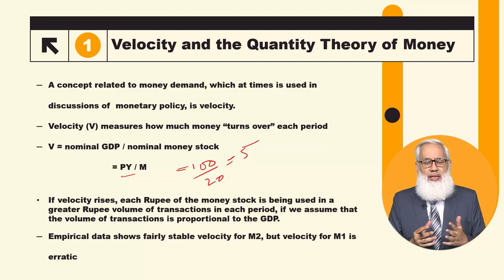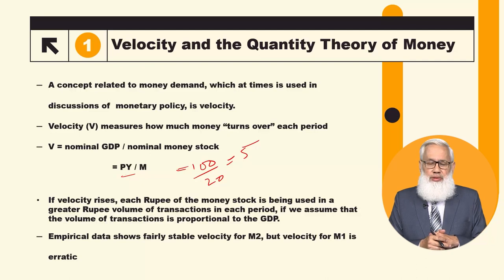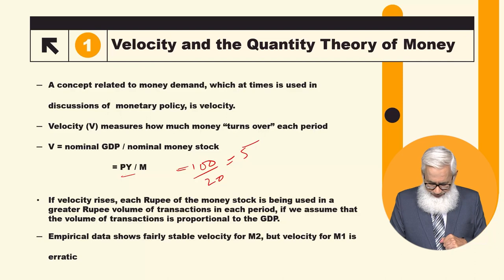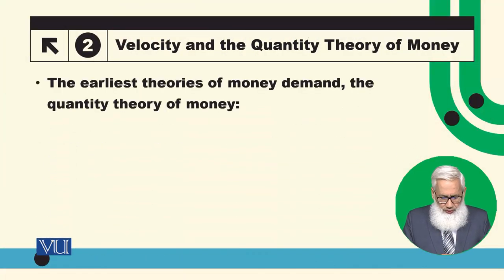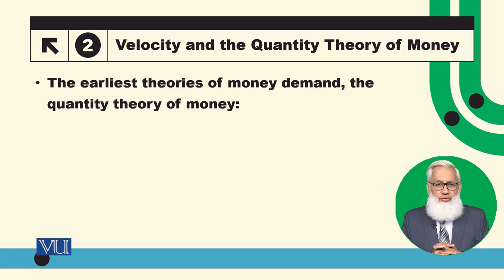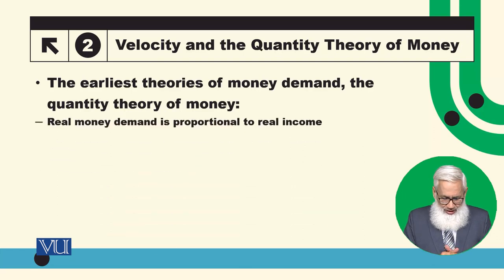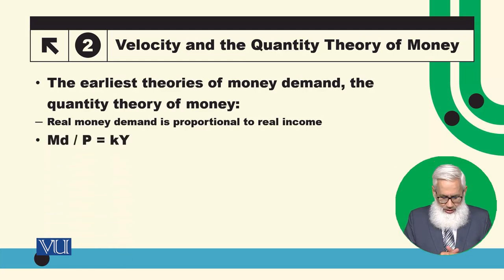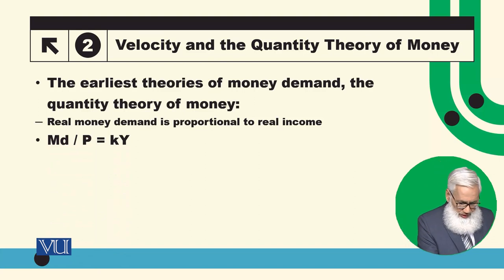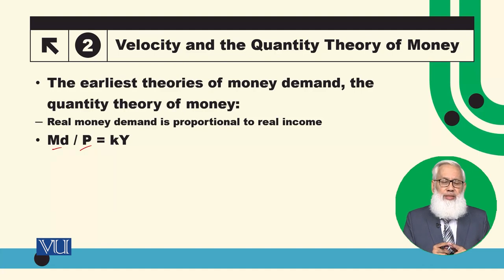Velocity definitions for M1 and M2 — we studied their definitions in the last modules. We will look at the empirical situation of M1 velocity and M2 velocity. The velocity concept comes from the Quantity Theory of Money, which is the most classical theory of money demand. According to it, real money demand is proportional to real income. Symbolically, money demand MD divided by P gives real money demand.